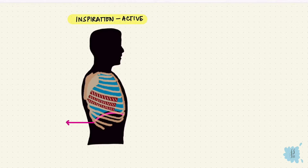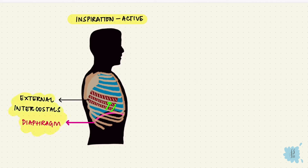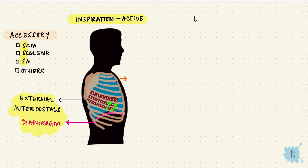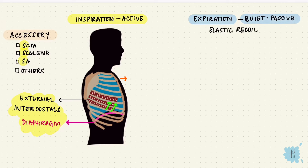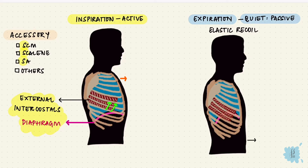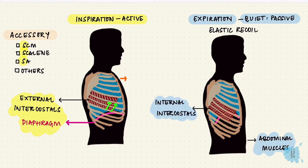So let's put it all together. Inspiration is active — most of the job is done by the diaphragm, and also the external intercostals, which move the ribs up and the sternum forwards. Accessory muscles are the sternocleidomastoid, the scalene muscles, serratus anterior, and other muscles of the chest wall. Quiet expiration is passive — it's from elastic recoil and the muscles of inspiration simply relax. If extra effort is needed, muscles come into play: the muscles of the abdominal wall and the internal intercostals, which pull the ribs down and the sternum falls backwards. So remember: E for I and I for E if you get confused.